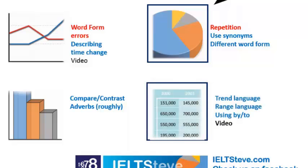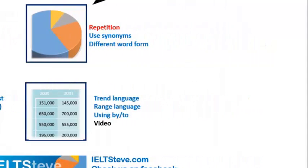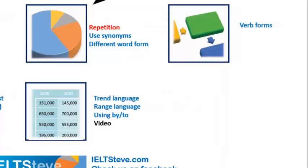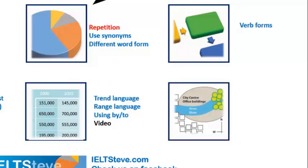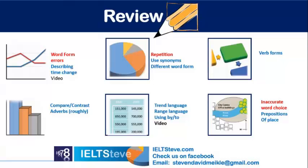In the table, we looked at three things: trend language, range language, and finally using 'by' and 'to' — good examples of how a high-level candidate would use that. There's a video on YouTube for that as well. In terms of a process, we looked at verb forms — a specific thing that might come up in processes. Processes and diagrams are slightly different to the other four because the language you need is different too. They look different and how you write about them is also different. For the diagram, we looked at inaccurate word choice and the mistakes candidates were making, and then we looked at some prepositions of place.